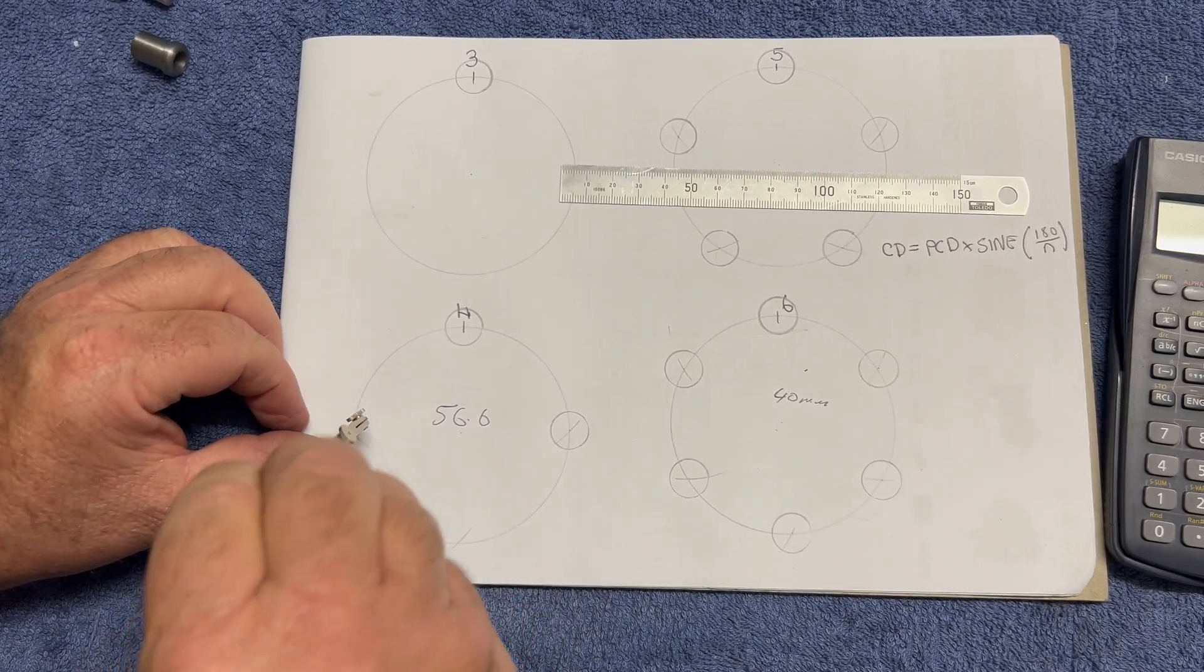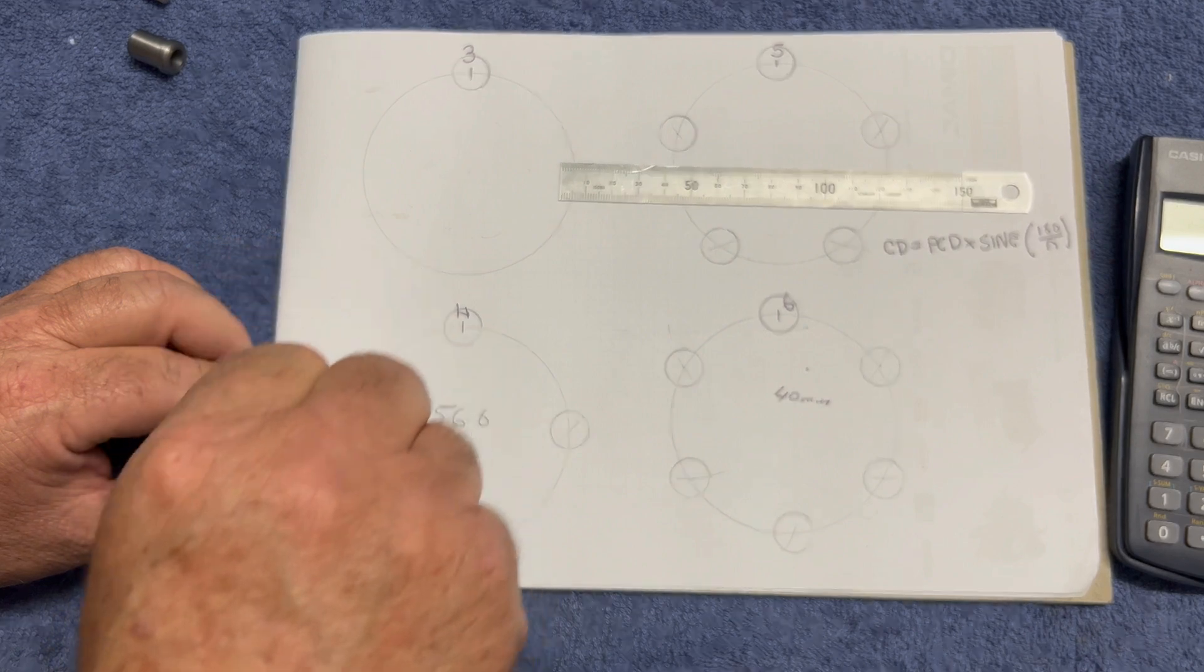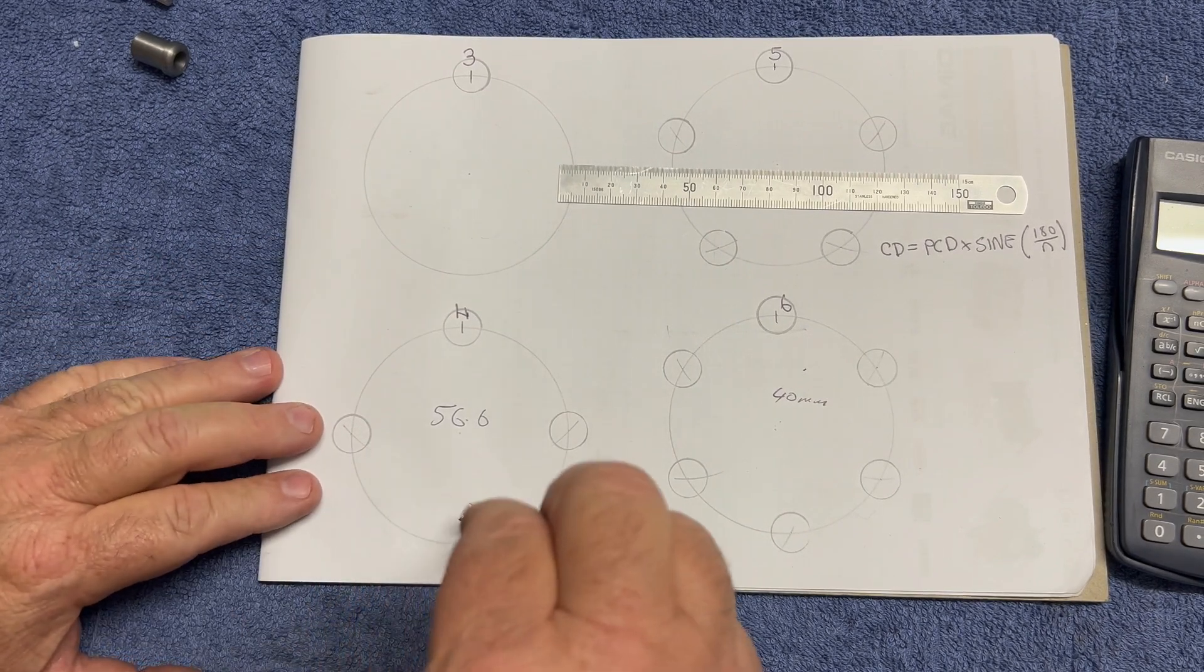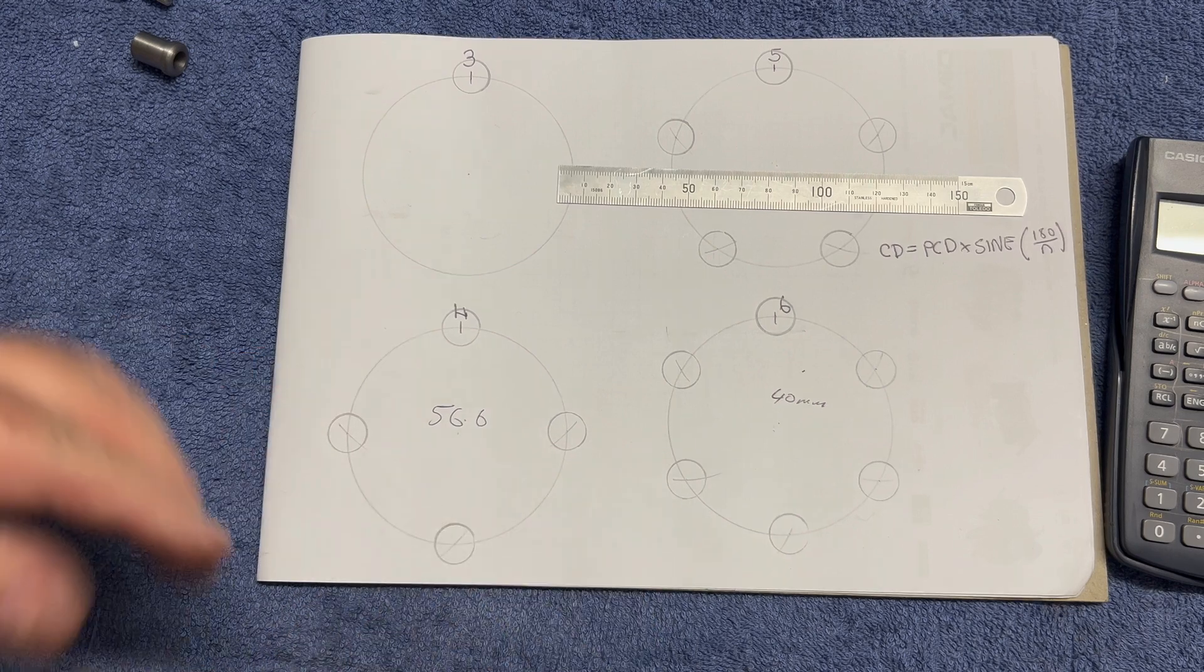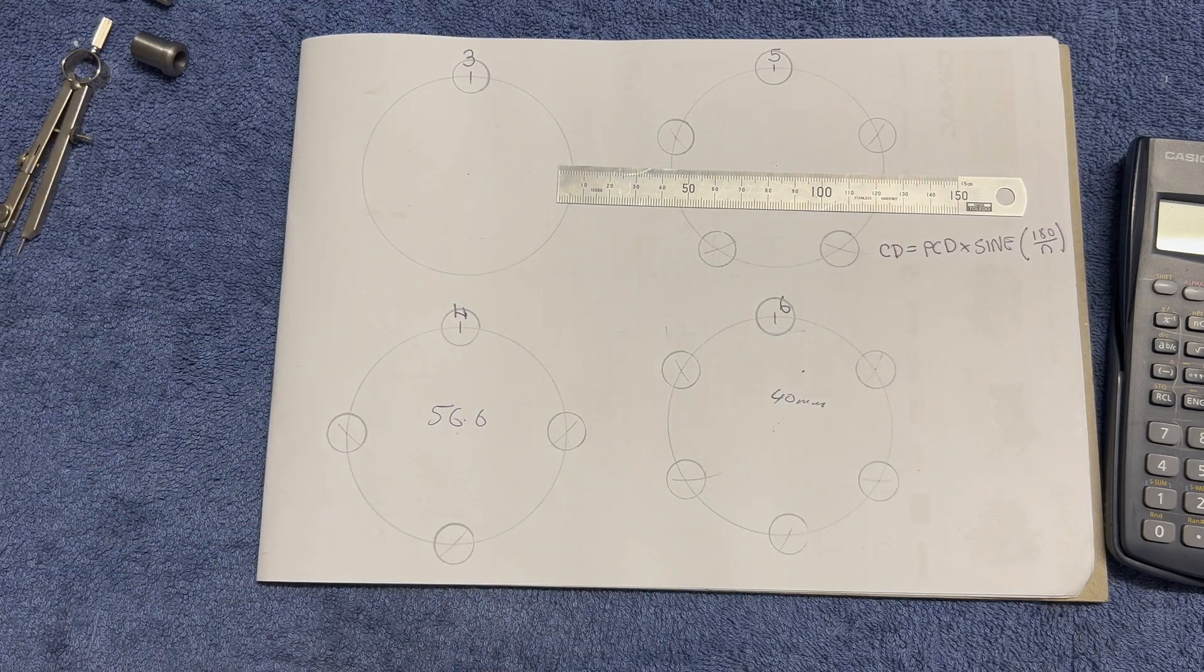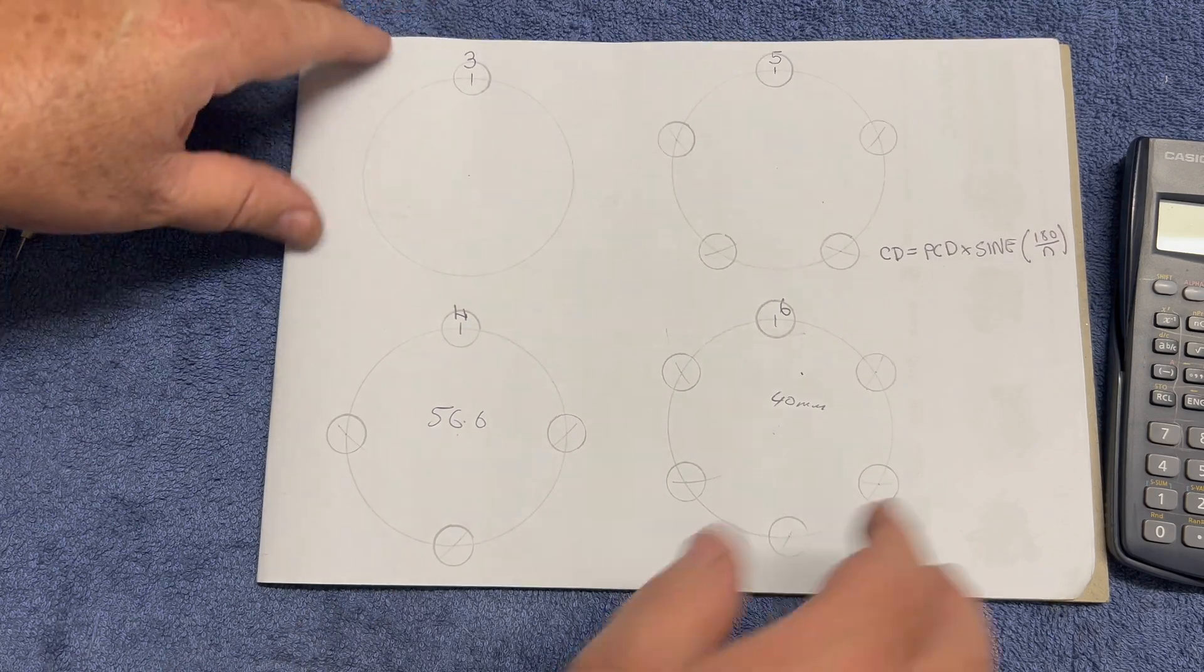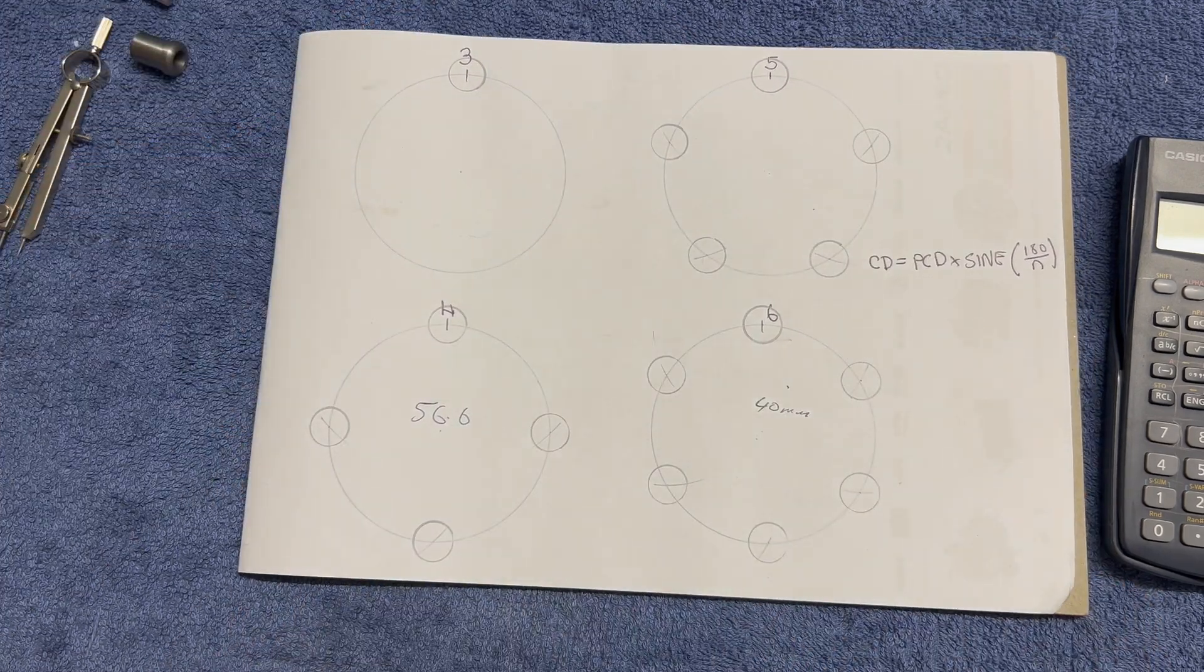And look, if you've got a CAD system and a CNC machine, that's going to be way more accurate than this. And second of all, if you've got a mill with a digital readout, it's even going to be more accurate than this. So there we have it, quite simple.